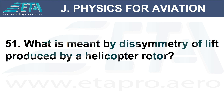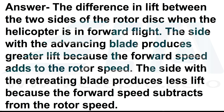What is meant by the asymmetry of lift produced by a helicopter rotor? Answer: the difference in lift between the two sides of the rotor disc when the helicopter is in forward flight. The side with the advancing blade produces greater lift because the forward speed adds to the rotor speed. The side with the retreating blade produces less lift because the forward speed subtracts from the rotor speed.